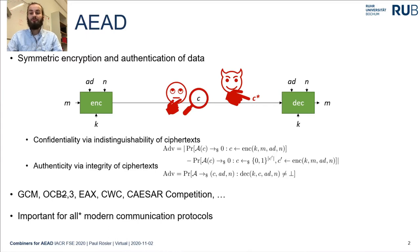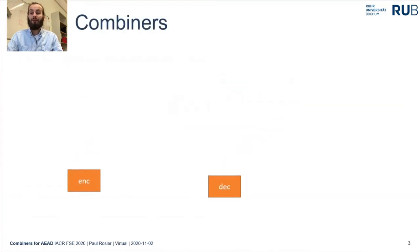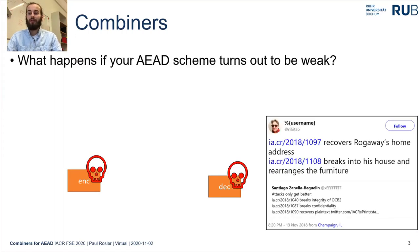There are plenty of real-world AEAD schemes — for example GCM, OCB3, or many newly presented in the CAESAR competition — and they are used in almost all modern real-world communication protocols to protect the actual payload. The problem is if one of the AEAD schemes that we regularly use in practical deployment turns out to be insecure, as the papers on OCB2 last year showed us.